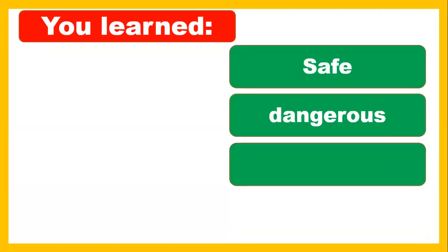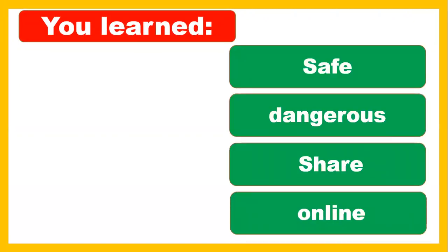You have to memorize these words: 'safe' — you must be safe on the internet. Electricity is dangerous, so do not touch it. 'Share' — share things with friends and teachers you know. If you share personal information with someone you don't know, it will not be safe for you. An example of online activity is the online classes you are taking now.